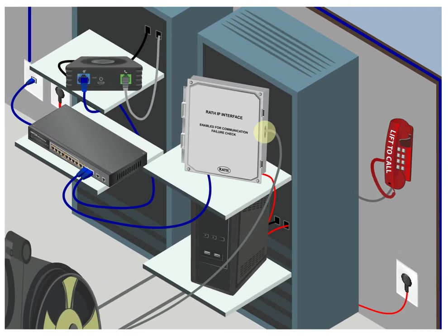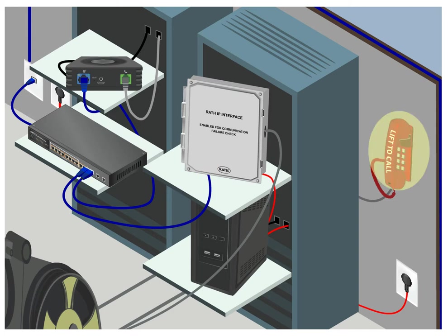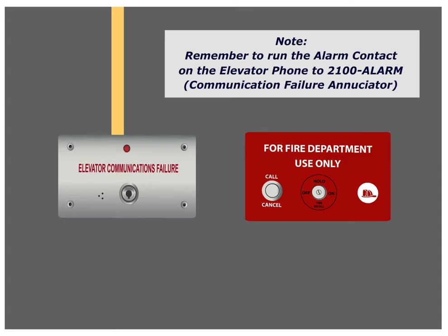Step 1: Run the single twisted shielded pair to the 2100 VOIP-LC. The IP setup for this device is the same as the 2100 VOIP, allowing the phone to ping the network to ensure proper communication. Step 2: Connect the 2100 VOIP-LC power to the RP7700104. Step 3: Connect the IP connection of the 2100 VOIP-LC to the network switch via an Ethernet cable. Step 4: Connect the 2300 630RC to the 2100 VOIP. Step 5: Connect the IP connection of the 2100 VOIP to the network switch via an Ethernet cable. Connect the 2100 VOIP power to the RP7700104. Remember to run the alarm contact on the elevator phone to the 2100 alarm.